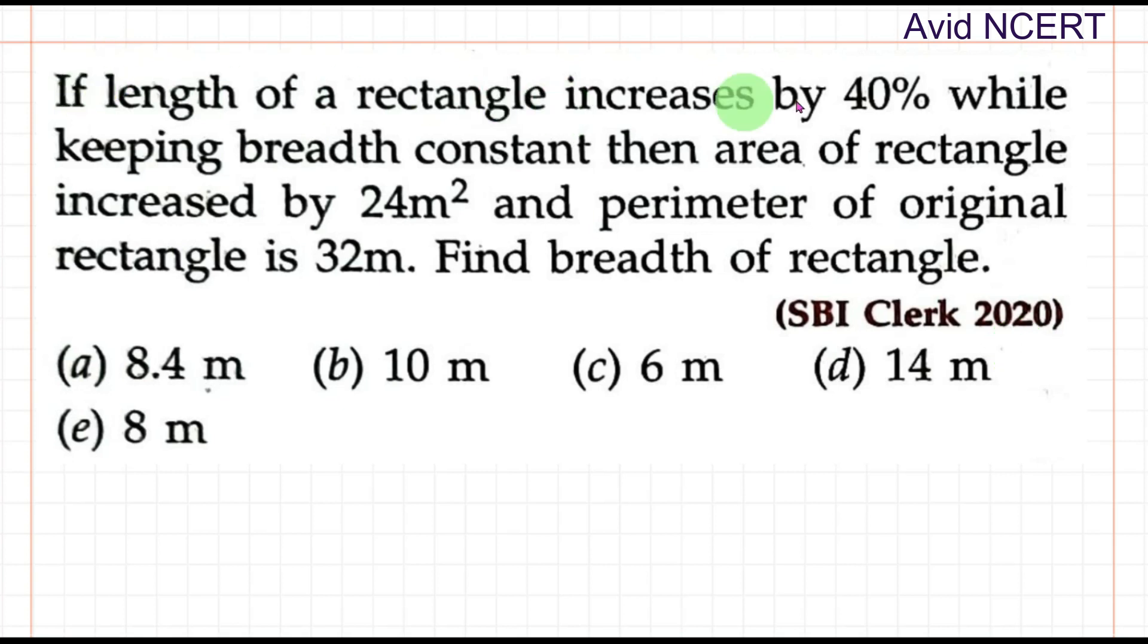If length of a rectangle increases by 40% while keeping the breadth constant, then area of rectangle increased by 24 square meters and perimeter of original rectangle is 32 meters. Find the breadth of the rectangle.